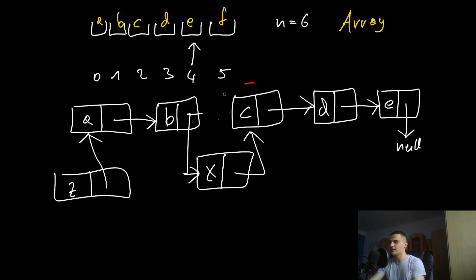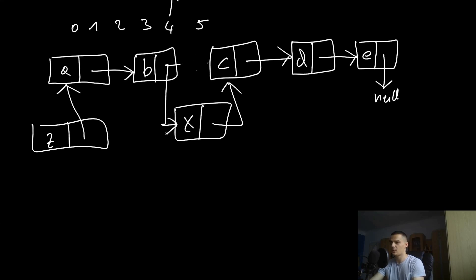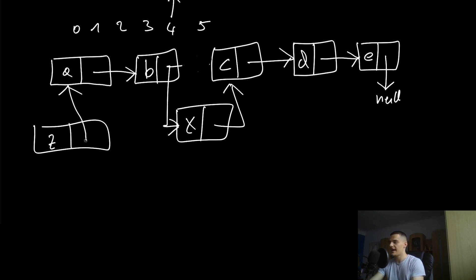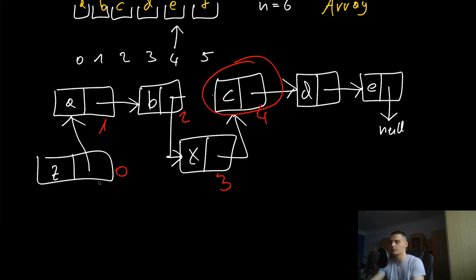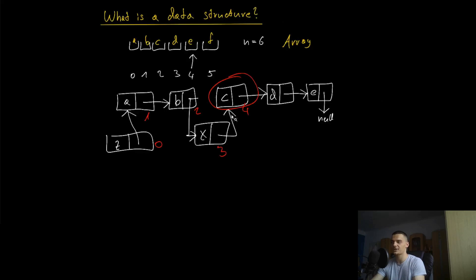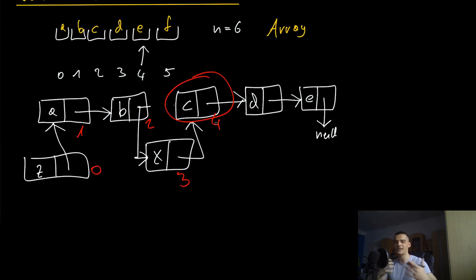With a linked list you have the benefit of dynamic sizing. However, accessing a specific element is not as easy. You cannot just say I want index 0, 1, 2, 3, 4 like with an array. To access index 4, you start at the beginning and count: this is index 0, one step further is index 1, then 2, 3, and 4. So to access index 4, you have to traverse through 0, 1, 2, and 3 — that's the disadvantage.